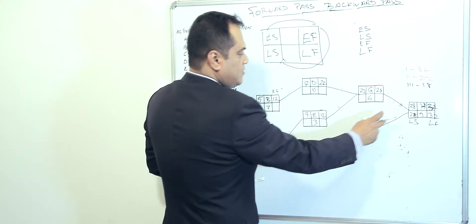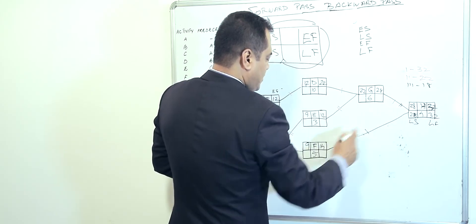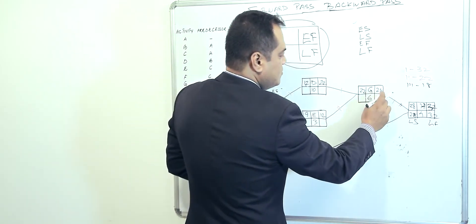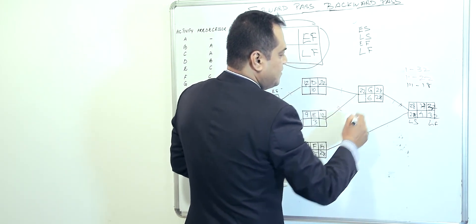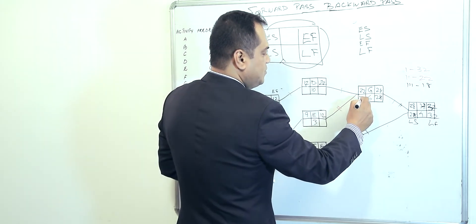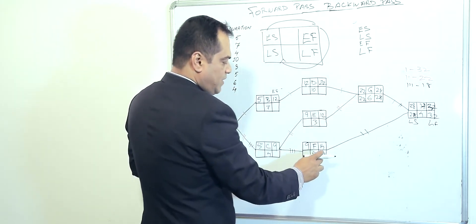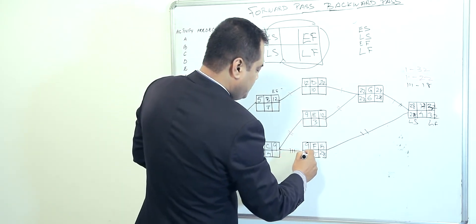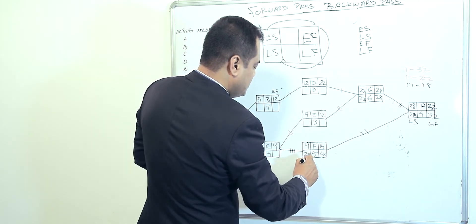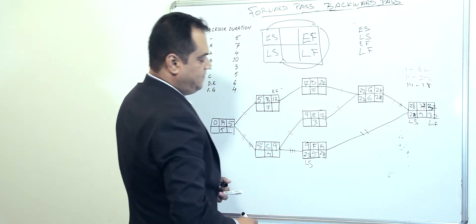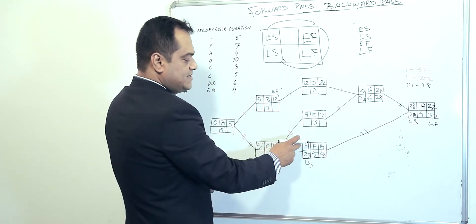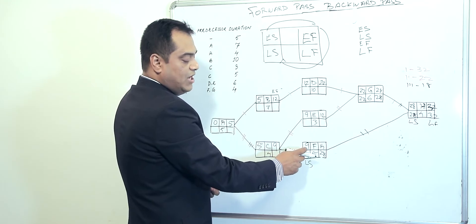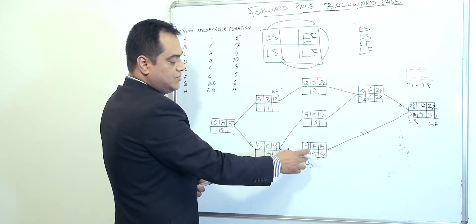For G, twenty-eight minus six becomes twenty-two as its latest start. For F, twenty-eight minus five is twenty-three, which is F's latest start. That means F's early start is nine days, but we can delay F by up to twenty-three days to start this task.